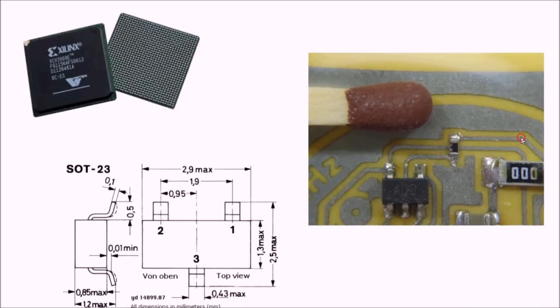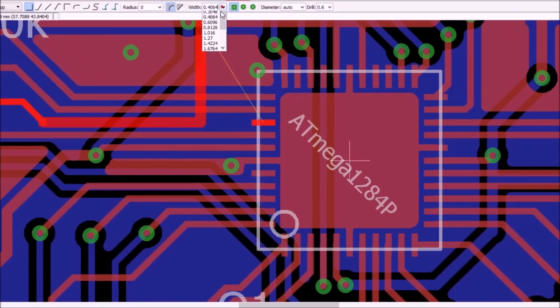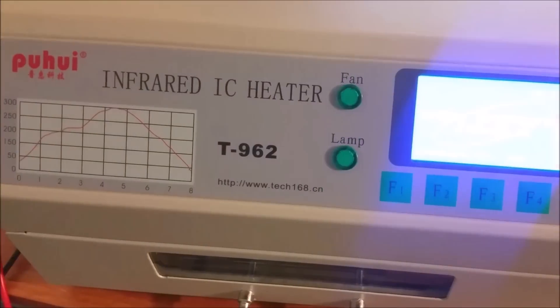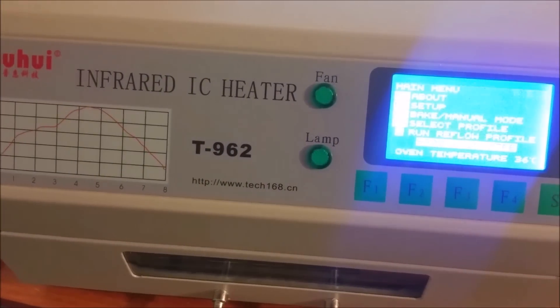As embedded systems become smaller and smaller, it's becoming more and more practical for hobbyists to begin investing in solder reflowing tools. One of these tools is the T962 oven.